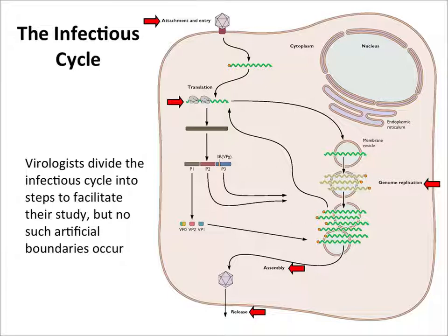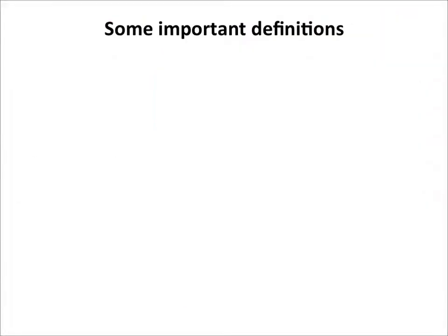The infectious cycle is sometimes called virus replication — it means the same thing. For a virus with a plus-stranded RNA genome that is a messenger RNA, as soon as the genome is released in the cytoplasm it's translated. But for a virus with a double-stranded DNA genome, the DNA can't be translated in the cytoplasm — DNA viruses generally have to go into the nucleus. So there are many different twists on the infectious cycle.